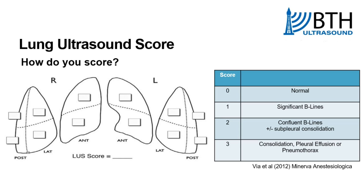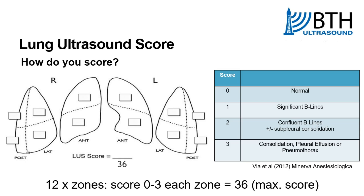Any other pathology within that zone, like a consolidation, pleural effusion, or pneumothorax, scores a three. So you have 12 zones in total, each can score nought to three, giving a potential maximum score of 36.